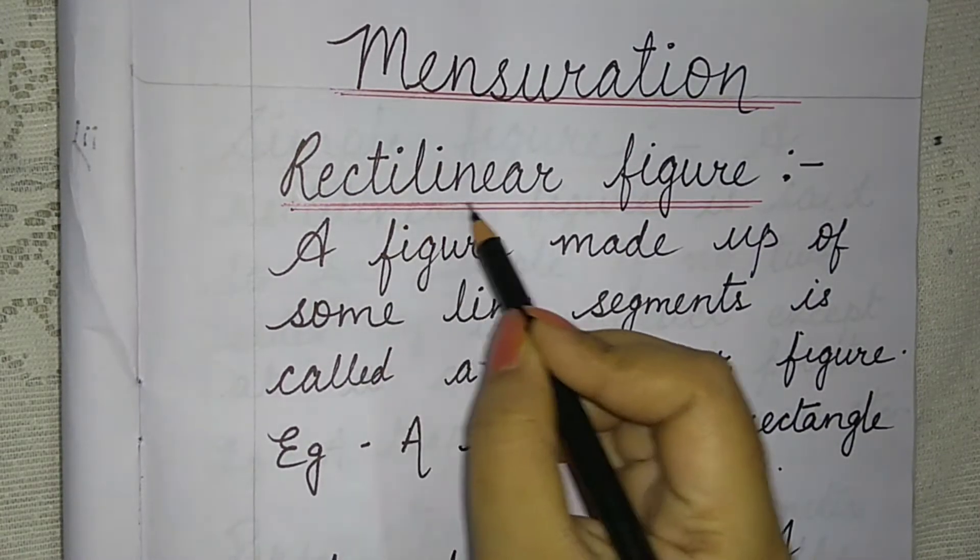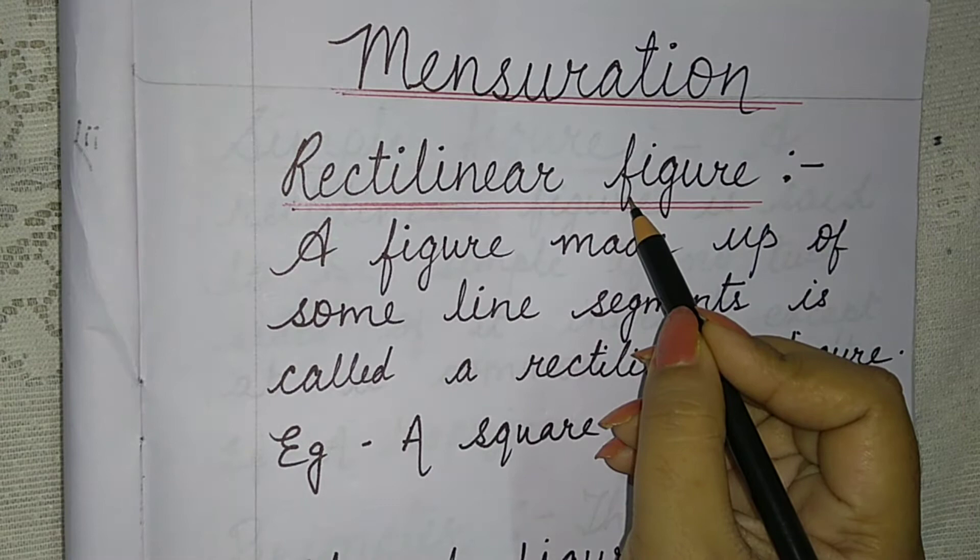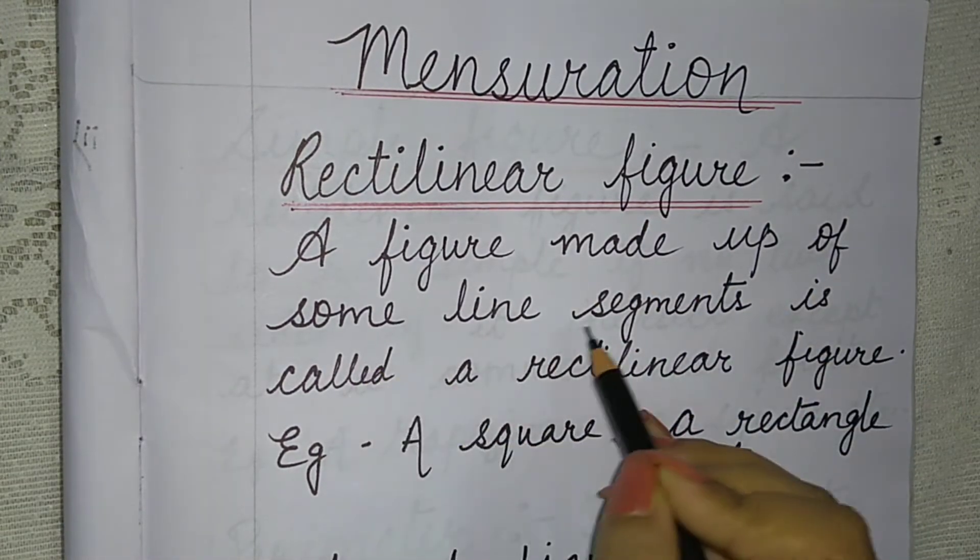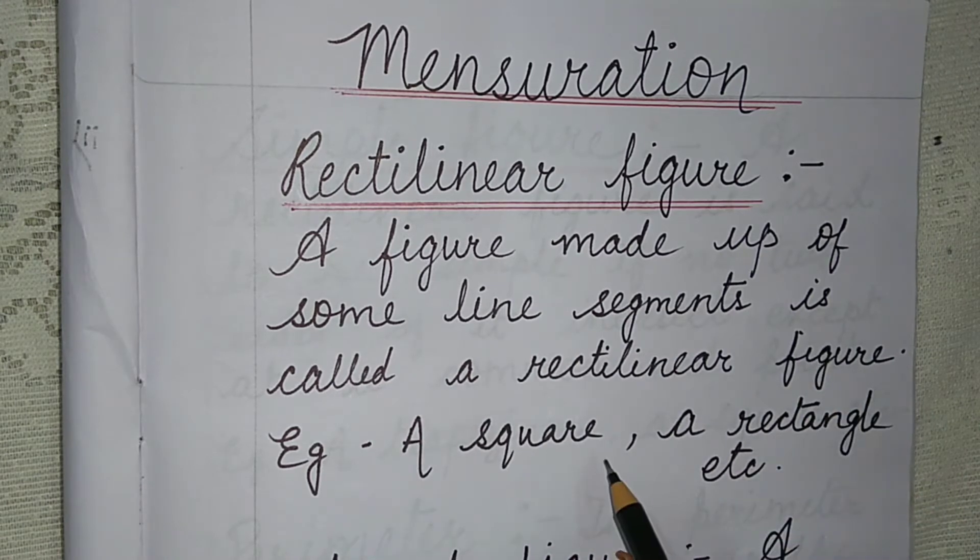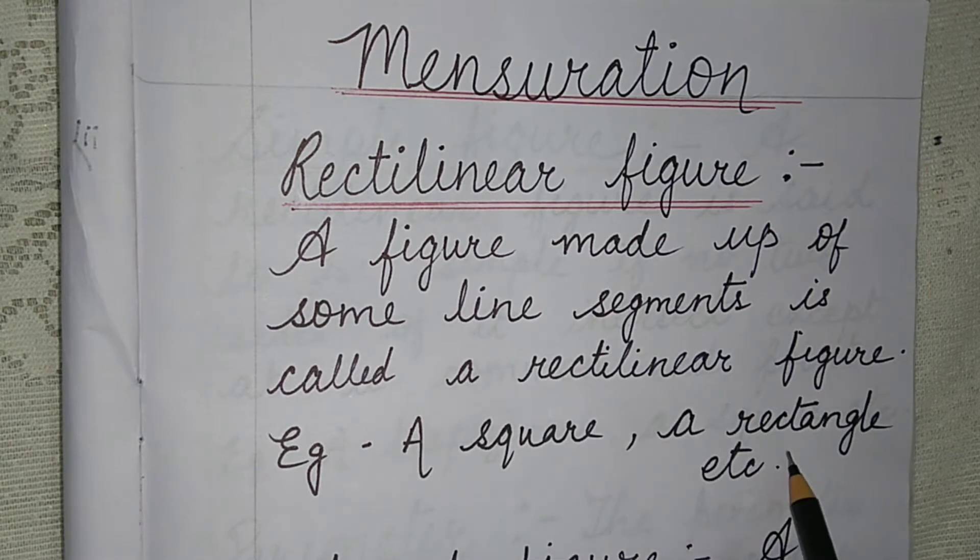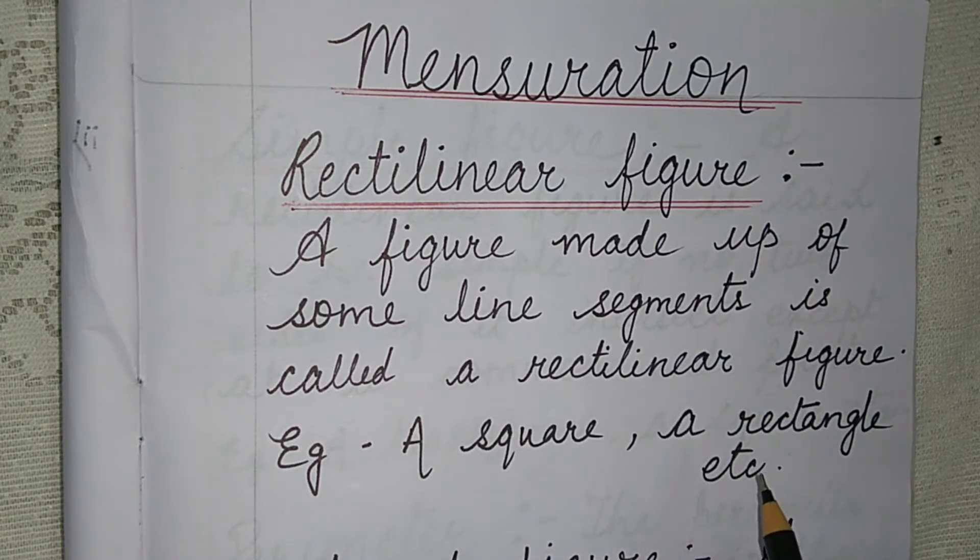First one, rectilinear figure. What is a rectilinear figure? A figure made up of some line segments is called a rectilinear figure. Examples: square, rectangle, etc. Whatever figure it may be, if it is made up of line segments, it is called a rectilinear figure.